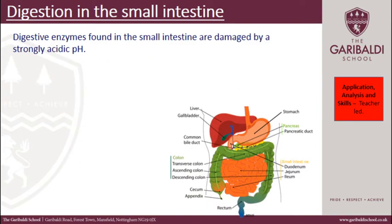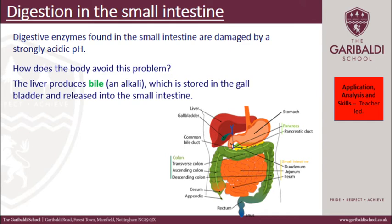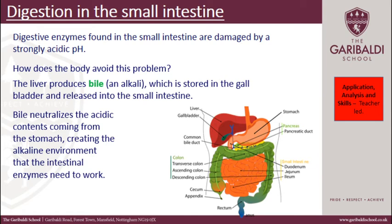Digestion in the small intestine: digestive enzymes are found in the small intestine and they can be damaged by strongly acidic pH. Food goes directly from your stomach — which is strongly acidic at pH 2 — into your small intestine. So how does the body avoid this problem? The liver produces bile. Bile is an alkali, stored in the gallbladder and released into the small intestine via the bile duct. Bile neutralizes the acidic contents coming from the stomach, creating an alkaline environment for the intestinal enzymes to work.